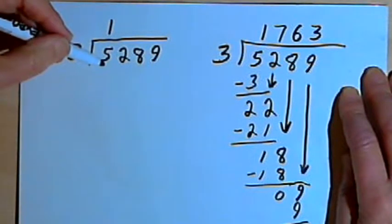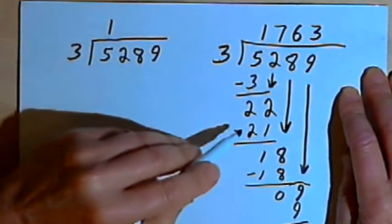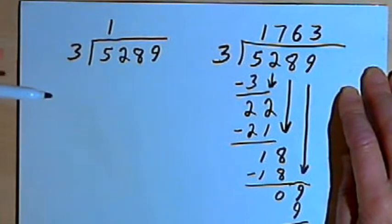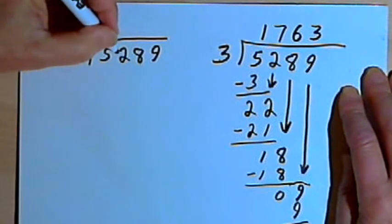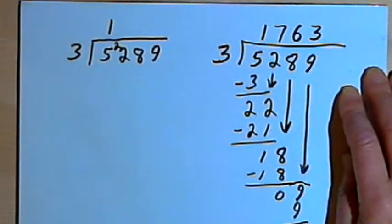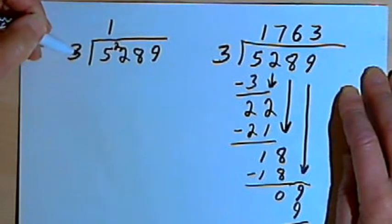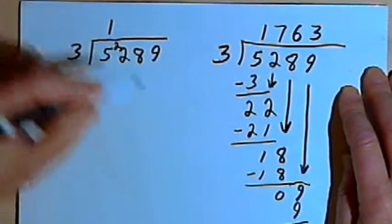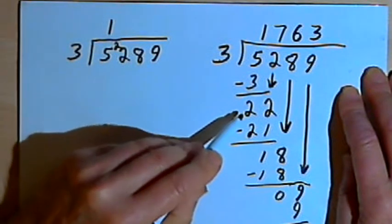So 5 minus 3 is 2. Instead of writing the 2 underneath 5 minus 3, I'm gonna take that 2 and put it in front of and a little bit above the next digit that I'm dealing with. So now what I've got is 3 divided into 22, which is the same thing I had before when I wrote the whole thing out.